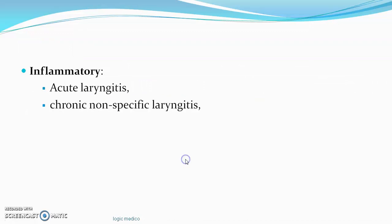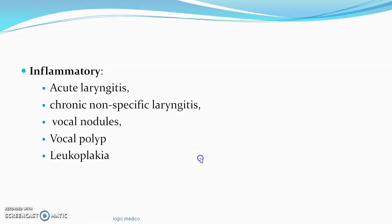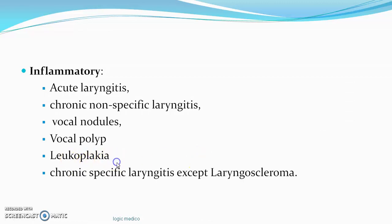Inflammatory causes include acute laryngitis, chronic non-specific laryngitis, vocal nodules, vocal polyps, leukoplakia, and chronic specific laryngitis. Vocal nodules — also called singer's nodules or teacher's nodules — are prominences on the free edge of the vocal cord. Vocal polyps are finger-like projections on the surface of the vocal cord. Leukoplakia is a white patch on the vocal cord and is a premalignant condition; patients should be referred to an oncosurgeon.